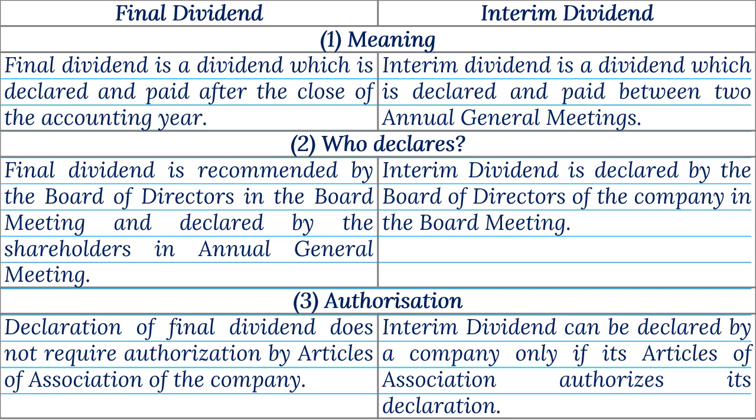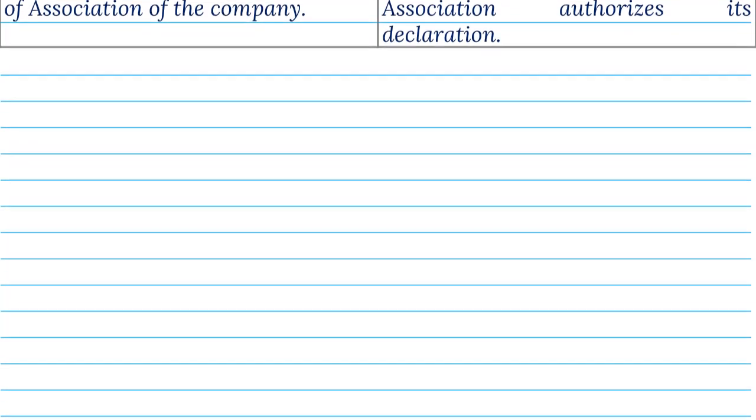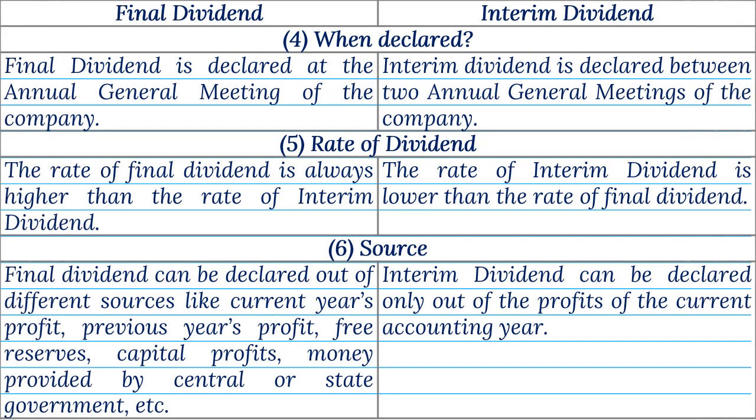Point 3 — Authorization: Declaration of Final Dividend does not require authorization by the Articles of Association of the company. Interim Dividend can be declared by a company only if its Articles of Association authorizes its declaration. Point 4 — When Declared: Final Dividend is declared at the Annual General Meeting of the company. Interim Dividend is declared between two Annual General Meetings of the company.